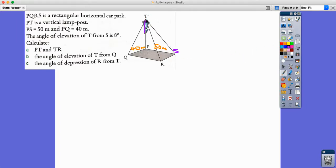The angle of elevation of T from S—this is really important that we know exactly what this means. You can see a right angle triangle here, and the angle of elevation is measured from the horizontal going upwards. From S looking towards T is 8 degrees, this is 8 degrees right here.